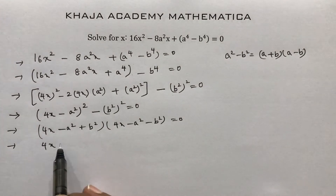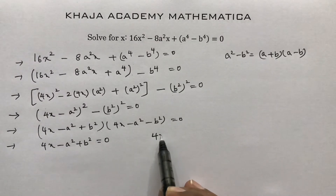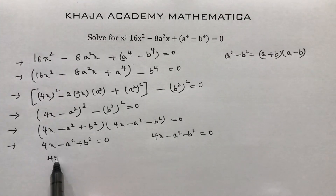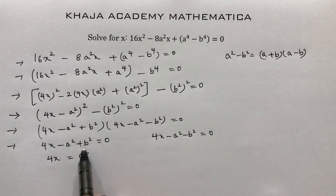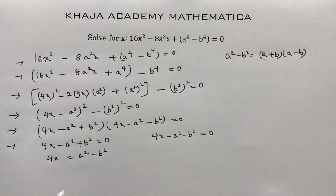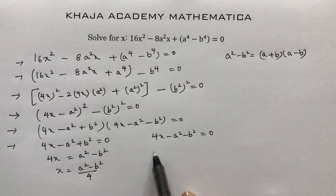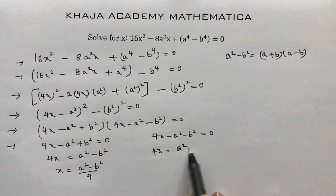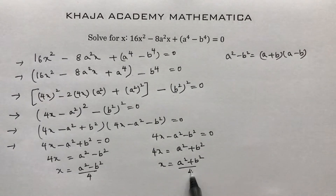Setting each factor to zero: 4x - a² + b² = 0 gives x = (a² - b²)/4. And 4x - a² - b² = 0 gives x = (a² + b²)/4. These are the two values of x.